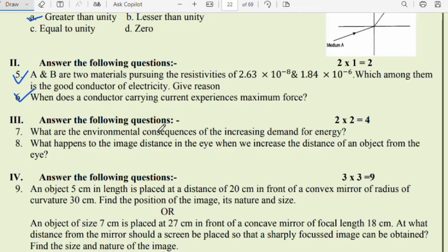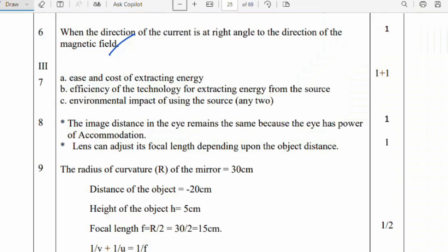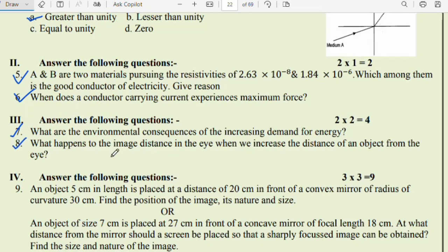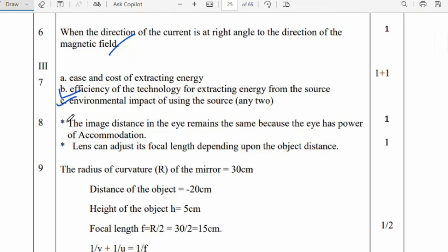Question 7: What are the environmental consequences of the increasing demand of energy? First, the cost of extracting energy, the efficiency of the technology for extracting energy from the source, and the environmental impact of using the source. Any two you can write, you will get two marks. Question 8: What happens to the image distance in the eye when we increase the distance of an object from the eye? The image distance in the eye remains the same because the eye has the power of accommodation and the lens can adjust its focal length depending upon the object distance.